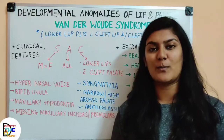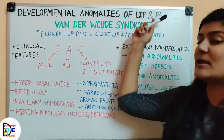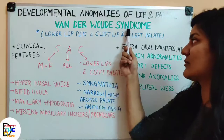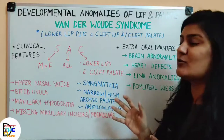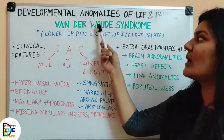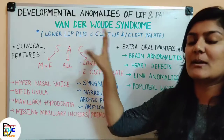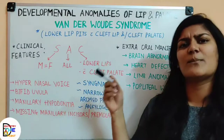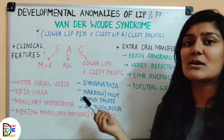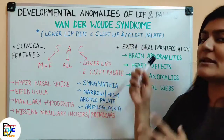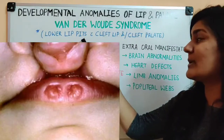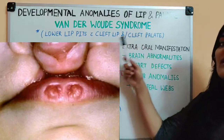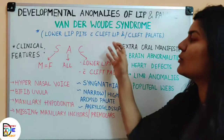Hi everyone, welcome to our channel 'Dentist to the Point.' Today we are going to start with the developmental anomalies of lip and palate. We'll begin with Van der Woude syndrome. This syndrome is named after its discoverer, and it is a hallmark combination — meaning in MCQ questions, Van der Woude syndrome includes a hallmark set of features.